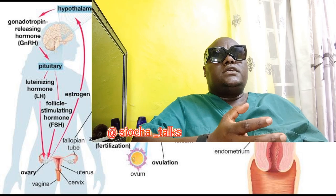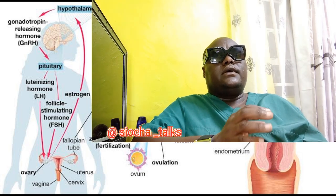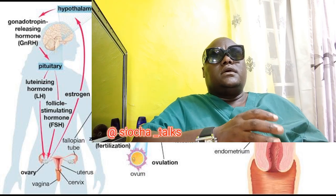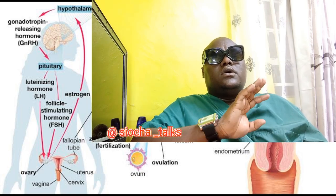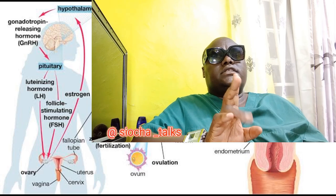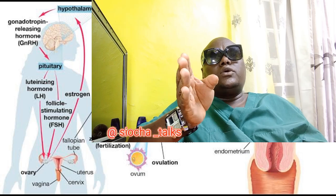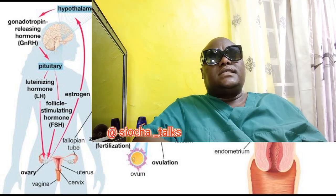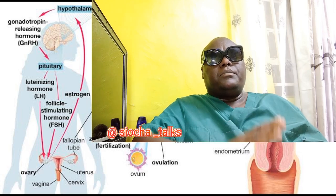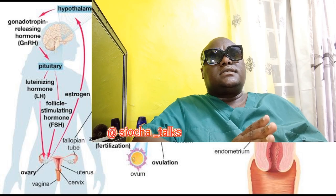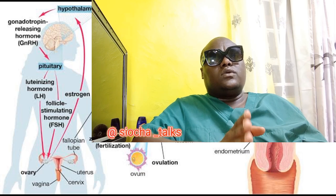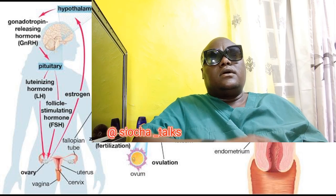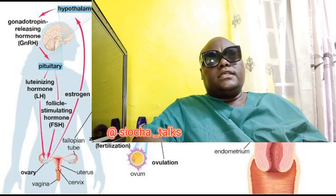We also have the positive ovulation predictor test. With ovulation predictor kits, one can detect the surge in luteinizing hormone (LH) levels. The increase in LH, especially just before ovulation, indicates that ovulation is on the way. A positive test result indicates that ovulation is likely to occur within the next 24 to 36 hours.